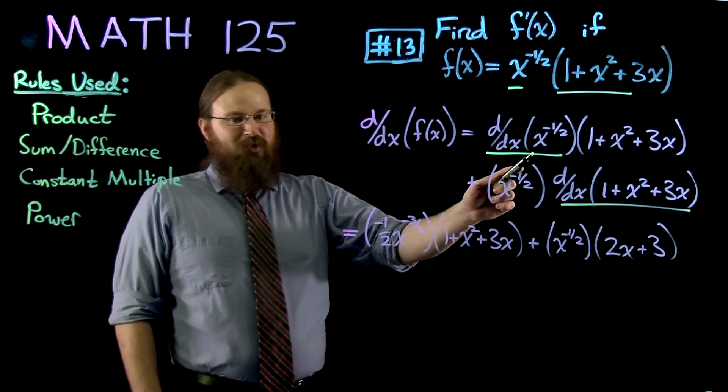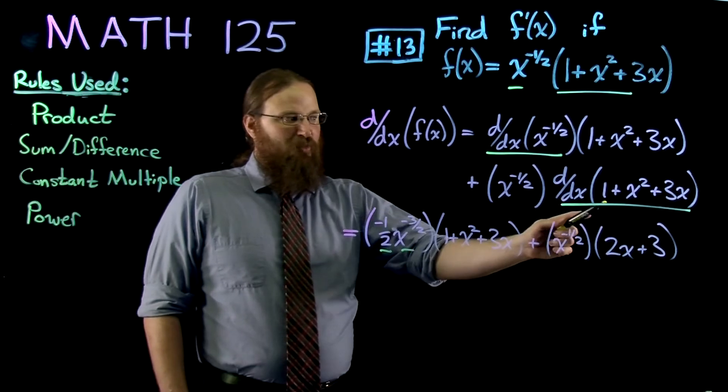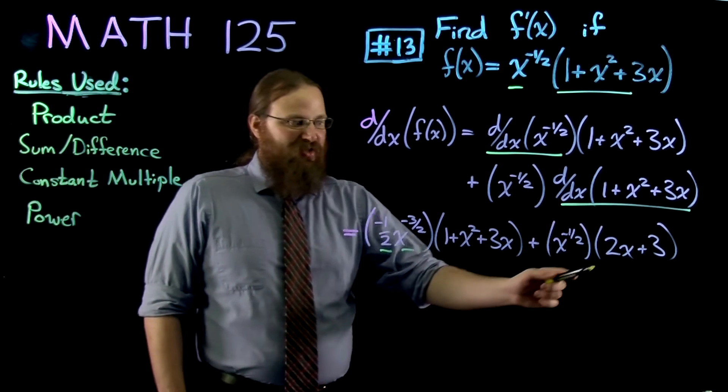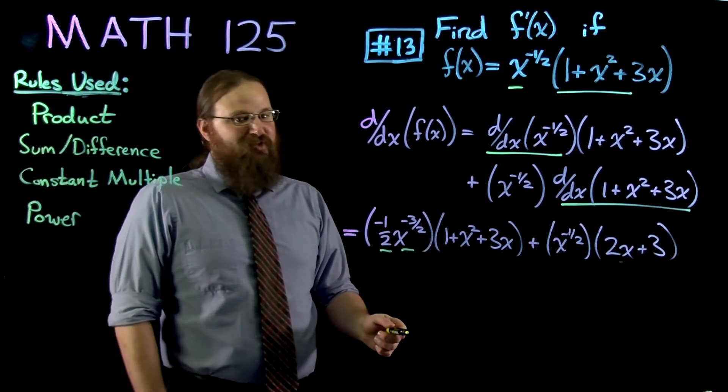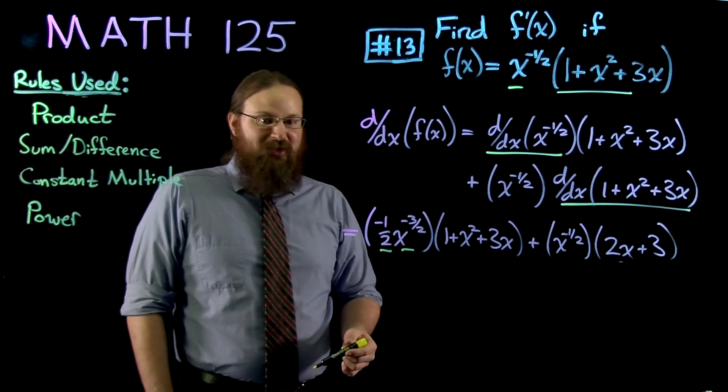So we've taken the derivative of x to the negative one-half using the power rule. We've also taken the derivative of 1 plus x squared plus 3x using the power rule, keeping in mind that the derivative of the constant 1 is 0. Now on the gateway, there's no need to simplify, so we're all done.